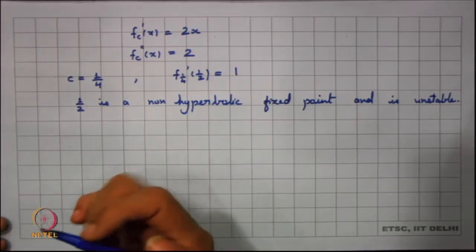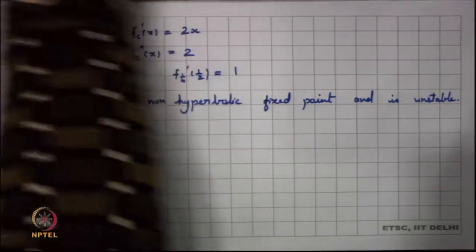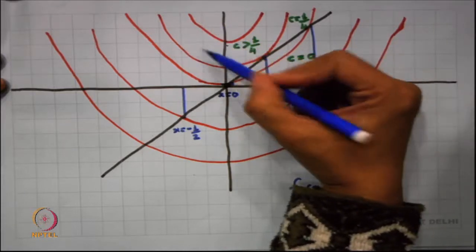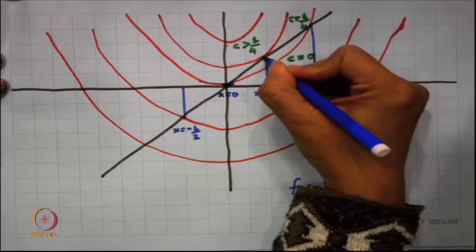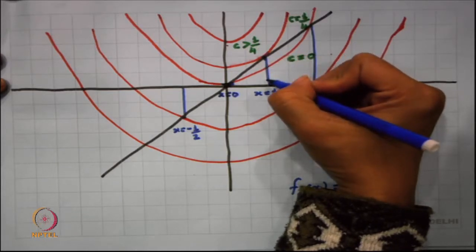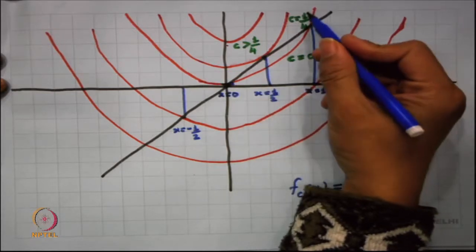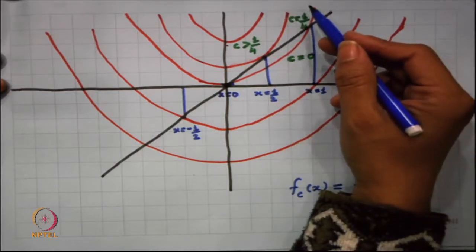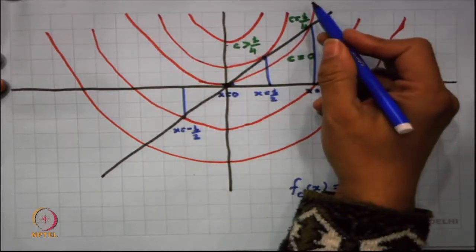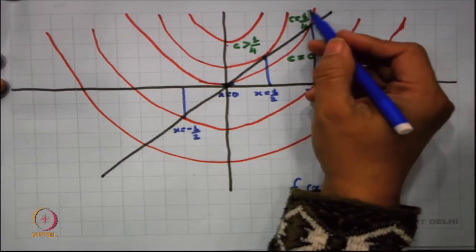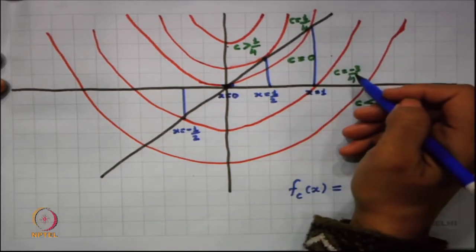What happens as we vary c? As c becomes less than 1/4, we find that there are 2 fixed points. At c = 0, the function is just x² and we have studied the dynamics of x². We get 2 fixed points, one of which will be a source and one a sink. This particular aspect continues until we reach c = -3/4.